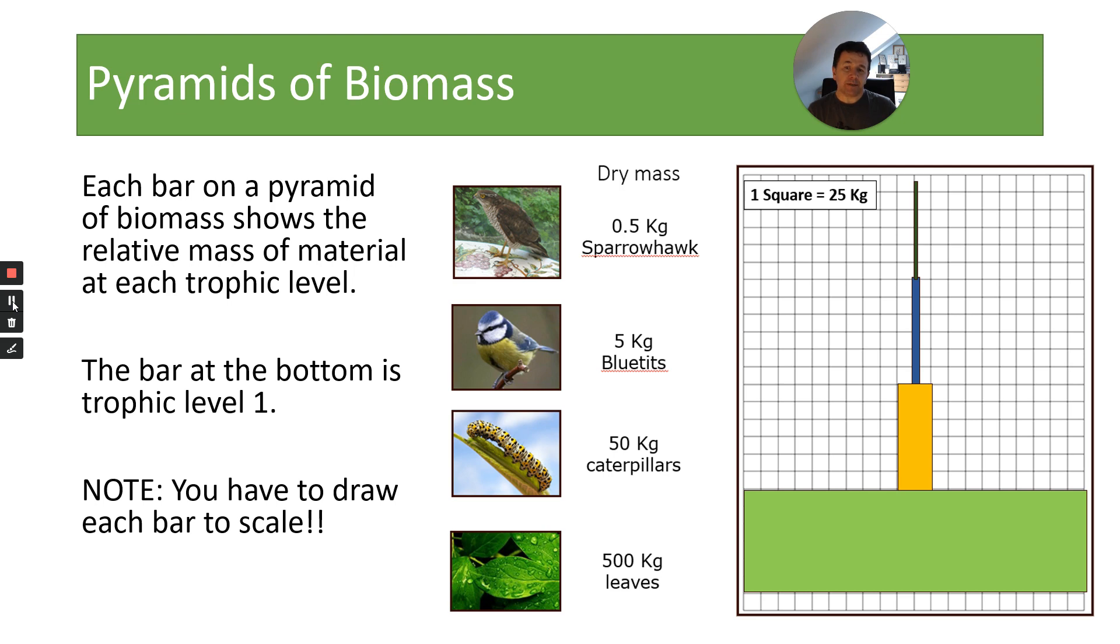This is drawn to scale, so each square in this case is 25 kilograms. You'll notice that in the bar for the producer you'll have 250 kilograms one side and 250 kilograms the other. The widths of the bars are the same for each trophic level, but the length of the bars is different depending on the amount of biomass.